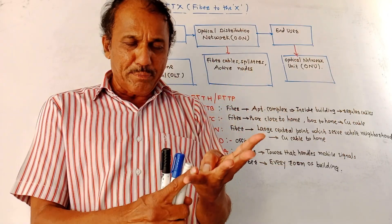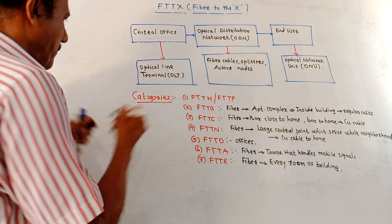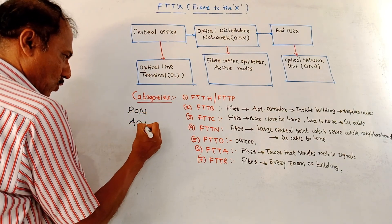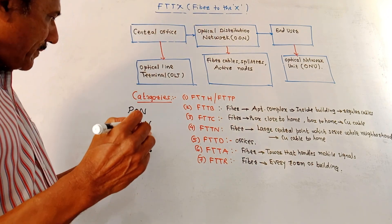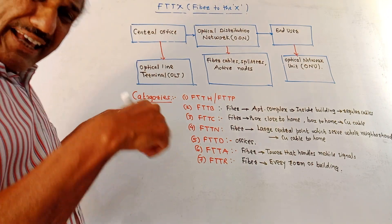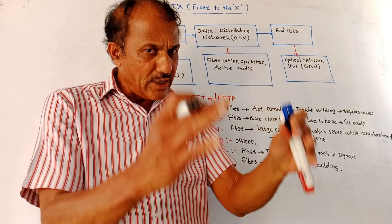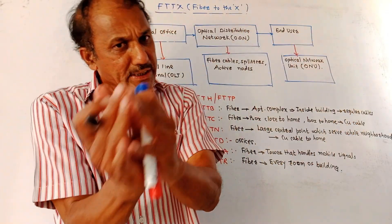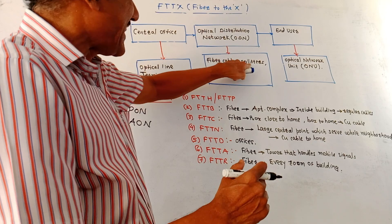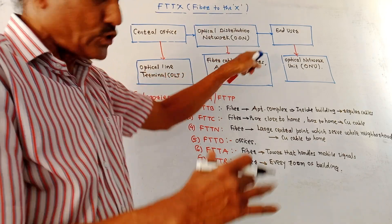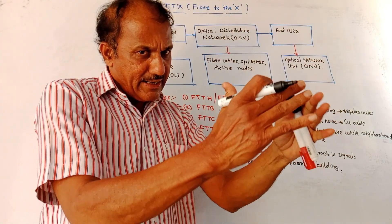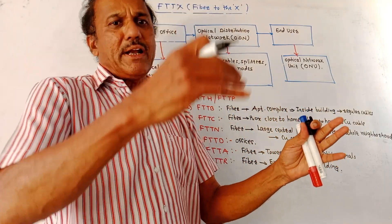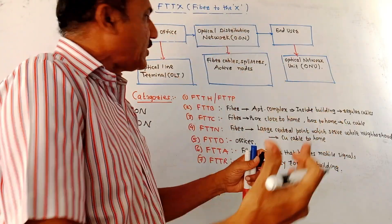One is the Passive Optical Network, or PON, and another is the Active Optical Network, or AON. In case of a passive optical network, to give connections from the main fiber to multiple users, optical splitters are used. The main data is split and then applied to the different users.